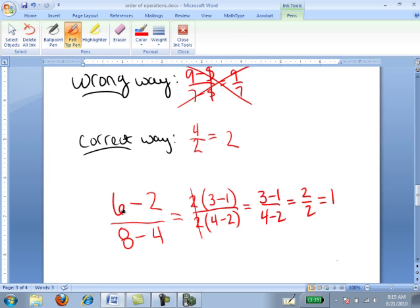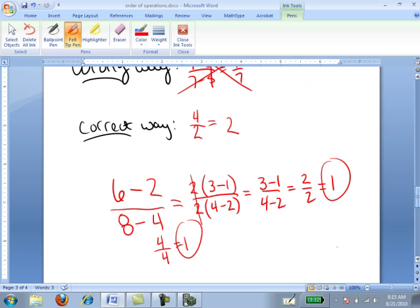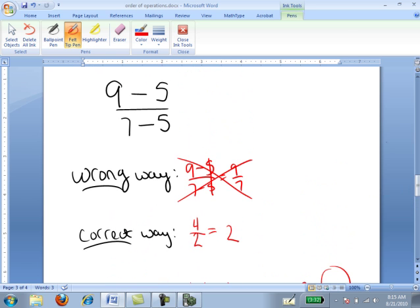If I had not done any of that factoring, I could have just taken 6 minus 2 is 4, 8 minus 4 is 4, 4 over 4 is 1. So in that situation, since I factored out of the numerator and factored out of the denominator, it was okay to cancel the 2 over 2. But in the first calculation we did, there was no factoring the 5 out. You can't just cancel the 5. If you're going to cancel something, it has to appear in the entire numerator and the entire denominator.